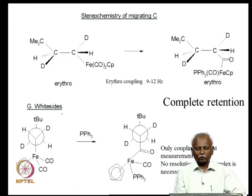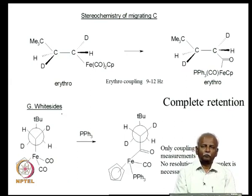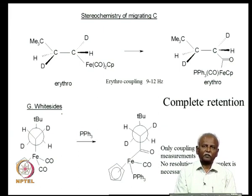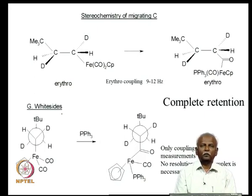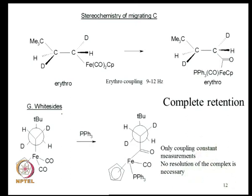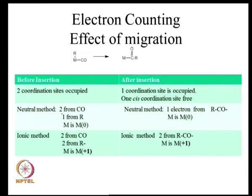This allows you to simply measure the coupling constant. When close to 60 degrees the coupling constant is close to 0–5 Hz, and if you have 0 or 180 degrees the coupling constant is close to 9–12 Hz. In this particular instance it was close to 11 Hz, so you can conclude — without measuring optical activity or by X-ray — that the stereochemistry has been retained in the migrating carbon. Whitesides performed this excellent experiment to show that complete retention was observed.